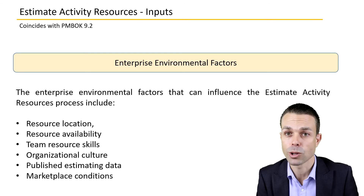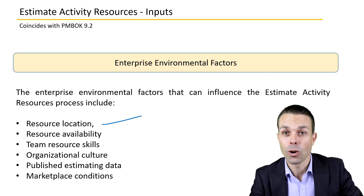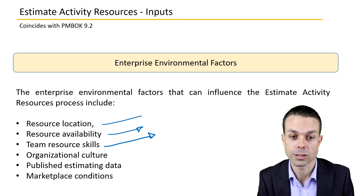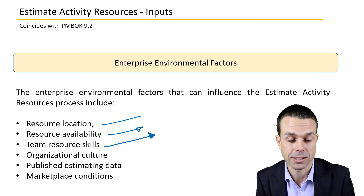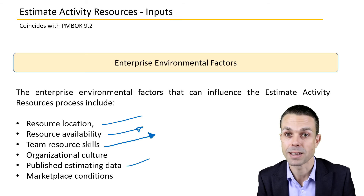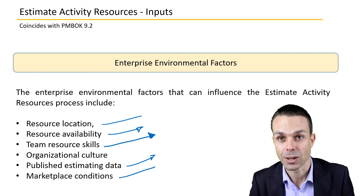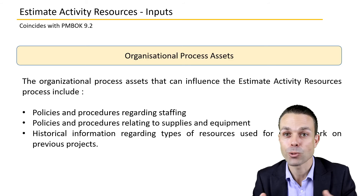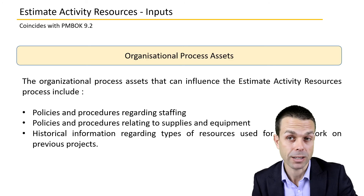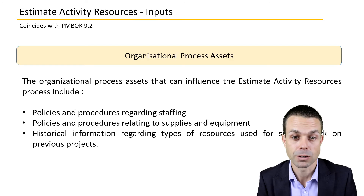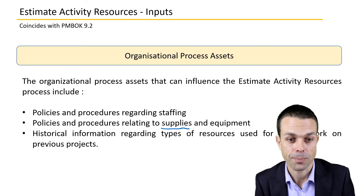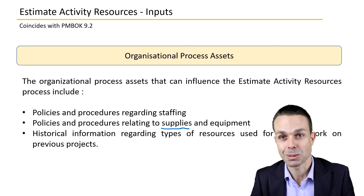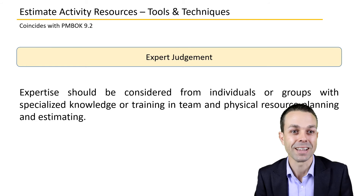Enterprise environmental factors include resource location and geographic distribution — whether the team is dispersed or co-located — team resource skills and general skill sets within the organization, published estimating data, and general marketplace conditions. Organizational process assets include staffing policies for onboarding or acquiring external staff, processes for supplies and equipment, and historical information on resource types used in similar past projects.